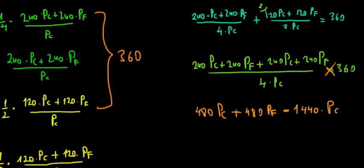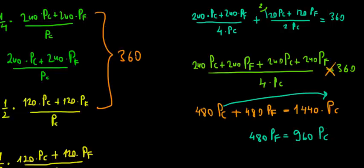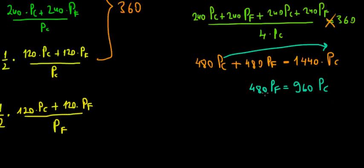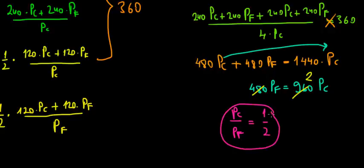Now let's take the price of clothing on the other side. So we have 480 price of food is equal to 960 price of clothing. Let's cancel out something, because that's exactly divisible by 2. So this is going to be 2. Now what we want is the ratio of price of clothing over price of food. So price of clothing divided by the price of food is going to equal to 1 over 2, and that's the relationship that we were looking for.